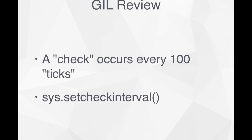So you kind of have to worry about these things called ticks. About every hundred ticks, which is a very low-level operation in Python, it checks to say: hey, can I let go of this lock? And can I give it to a different thread so it can do what it's trying to do at the same time?